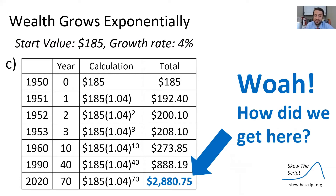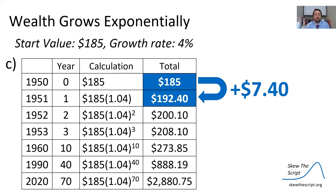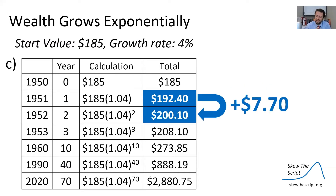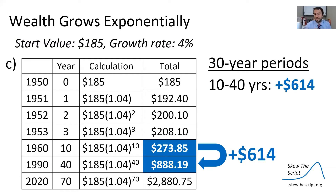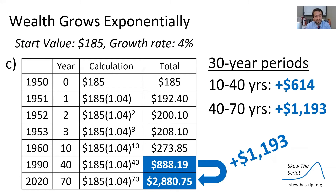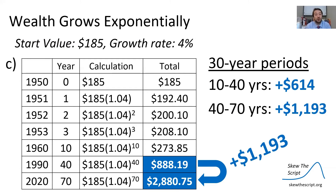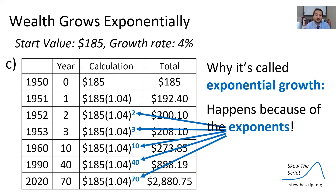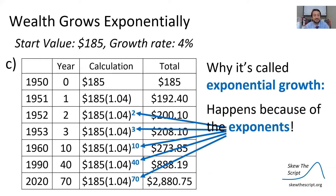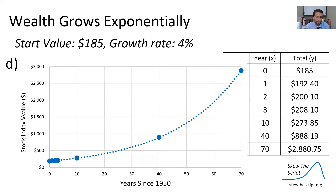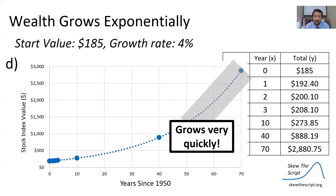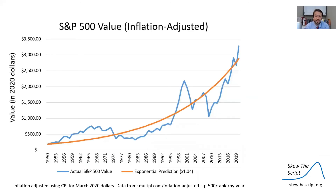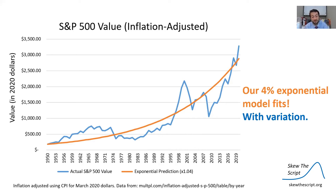How did we get to that point? From year 0 to year 1, we saw an increase of $7.40. The next year, a little higher — $7.70, then up to $8. The growth is accelerating. We started by growing $7.40 a year, now we're growing $8. Looking at 30-year periods, that growth is naturally larger: from 10 to 40 years, we gained $614, but from 40 to 70 years, we gained nearly $1,200. It really starts to accelerate as time moves on. This is happening because of exponential growth — aptly named because it's occurring thanks to the exponents. We can plot the table where the x-axis is years since 1950 and the y-axis is value. The growth starts slow on the left side of the curve, then accelerates and grows very quickly. Our exponential prediction line in orange fits this blue line — our 4% exponential model fits, though of course there is variation.